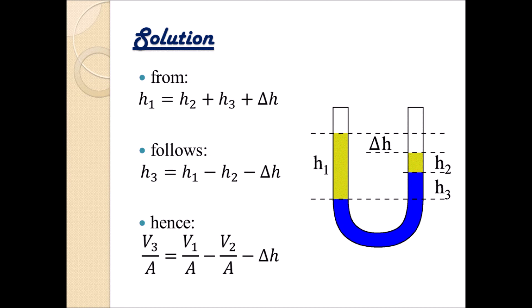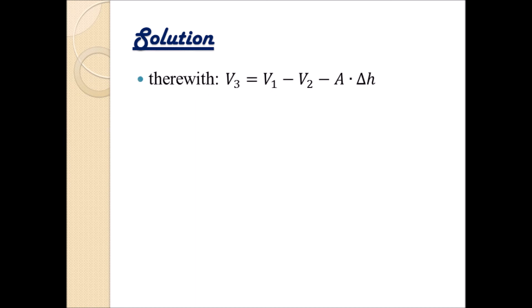And as a result, we get that the volume V3 that we didn't have equals V1 minus V2 minus cross-sectional area A multiplied with the height difference delta h. And if we use this equation in our basically final equation for calculating the density of the oil, we are getting an equation that contains on the right-hand side only known variables.